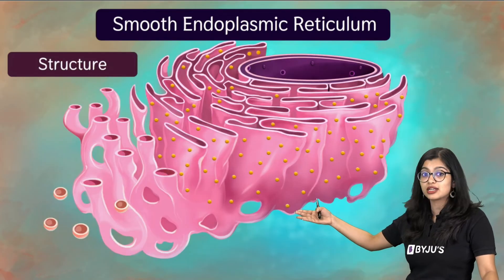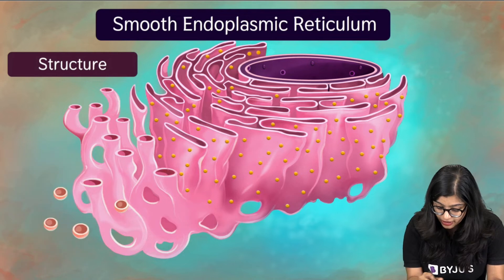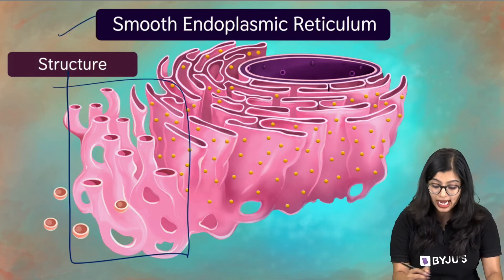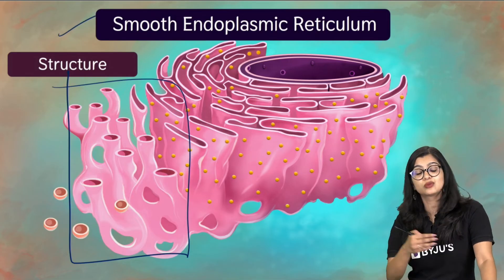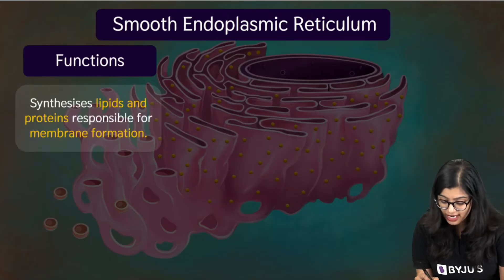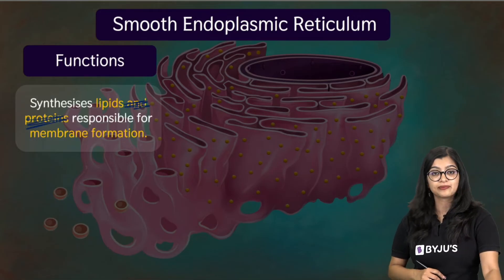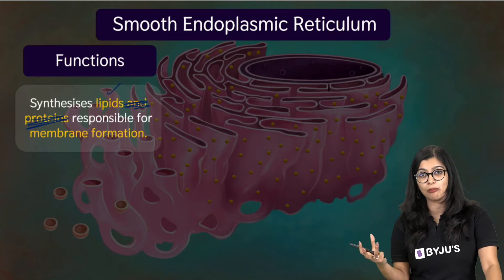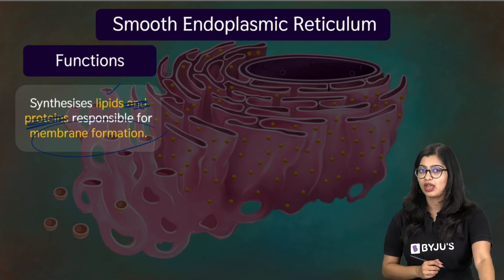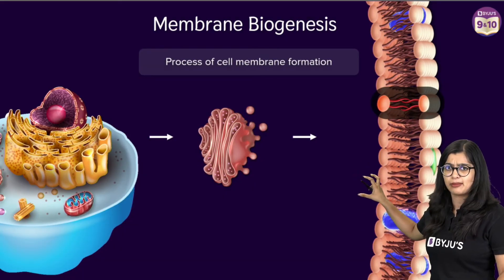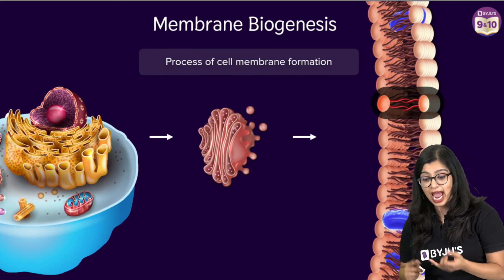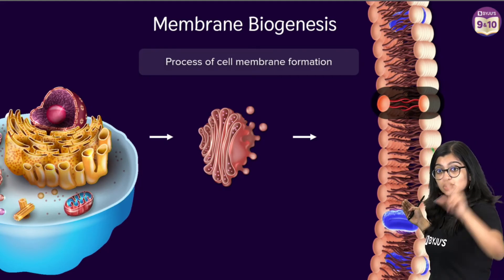On the other hand, some parts of the ER are smooth. If you look at this particular region, there are no ribosomes — the surface appears smooth, which is why this type of endoplasmic reticulum is called the smooth endoplasmic reticulum. The function of the smooth endoplasmic reticulum is primarily for the synthesis of lipids, and it plays a key role in producing various components necessary for the cell. It also plays a key role in membrane formation. The cell membrane is made up of lipids — specifically a phospholipid bilayer — and there are also various proteins present.